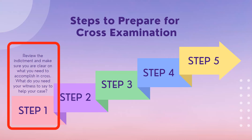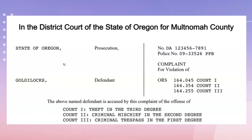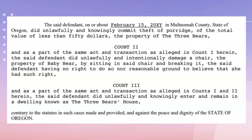For the purposes of this video, I'm going to use the example of Goldilocks and the Three Bears. In the case of State of Oregon versus Goldilocks, she's being charged with theft, criminal mischief, and criminal trespass. The indictment lists exactly what she's being charged with, and later goes into more specific details about what each of those counts means.